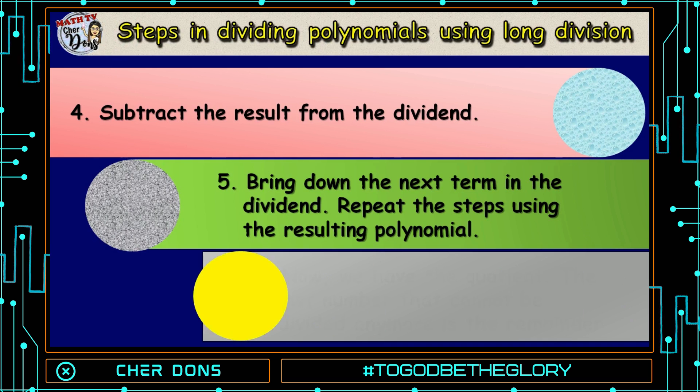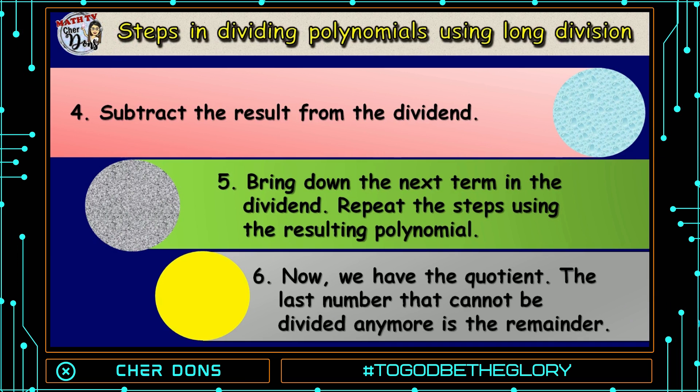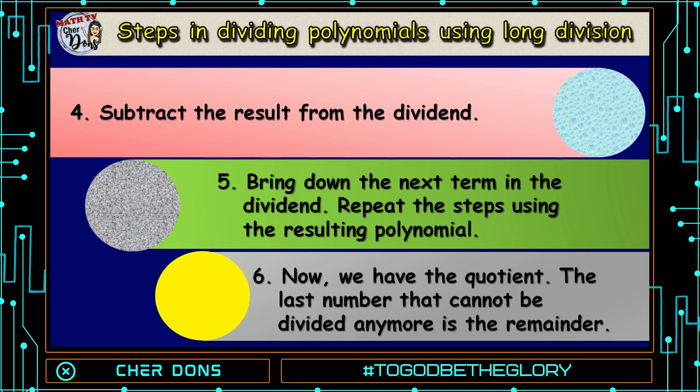And Number 6: Now we have the quotient. The last number that cannot be divided anymore is the remainder.